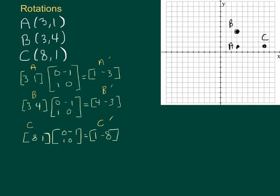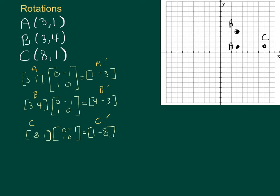Alright, so let's plot those points and see what it did. Let's see what the matrix did here. So A prime is now 1 negative 3, that's A prime. And B prime is 4 negative 3. And C prime is 1 negative 8.